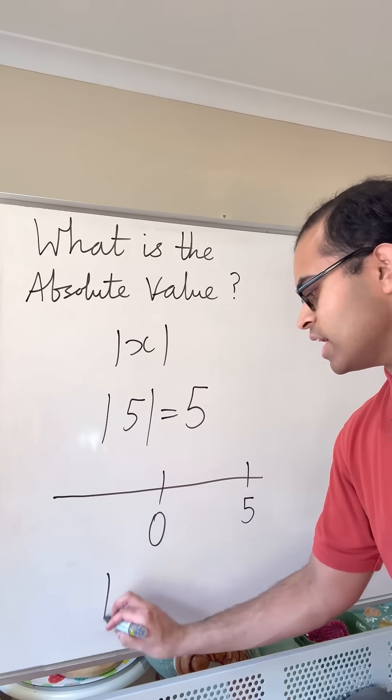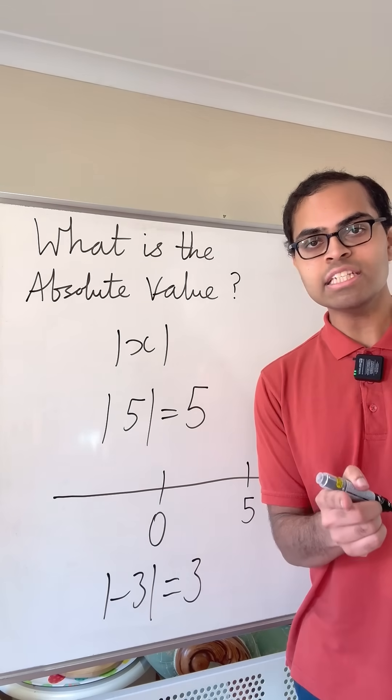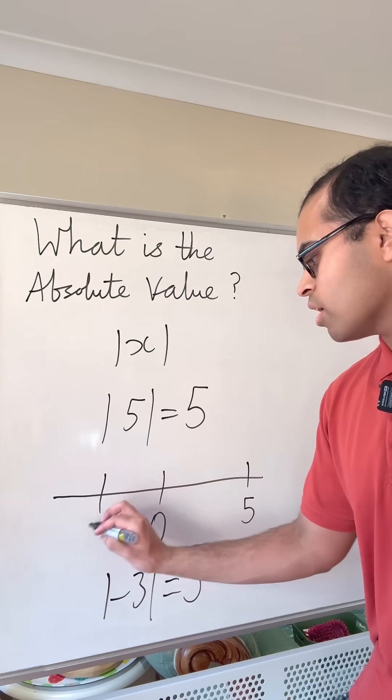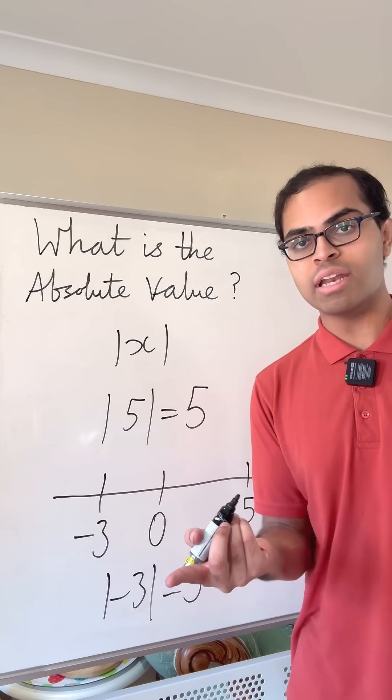But on the other hand, the absolute value of negative three is just going to equal three because it is the distance between negative three and zero on the number line. It's always going to be a non-negative number because the distance is always going to be non-negative.